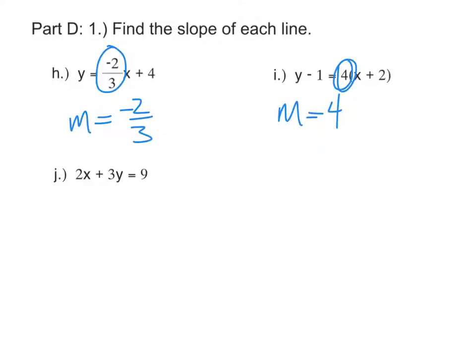However, when it's in standard form, in general form like this one, 2x plus 3y equals 9, you can't just take a number and say that's the slope. You have to put it in slope-intercept form first, so I'm going to subtract 2x from both sides.